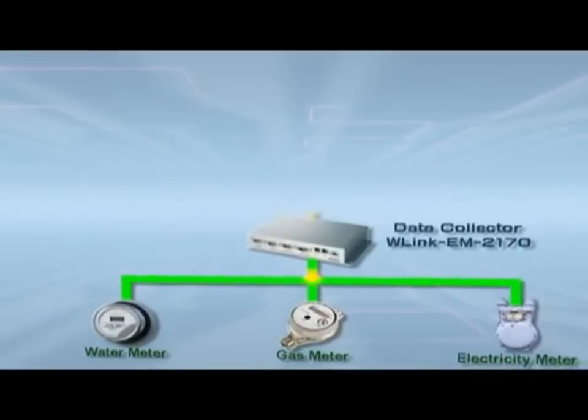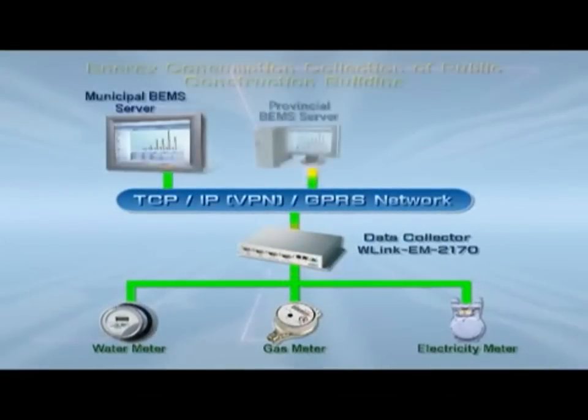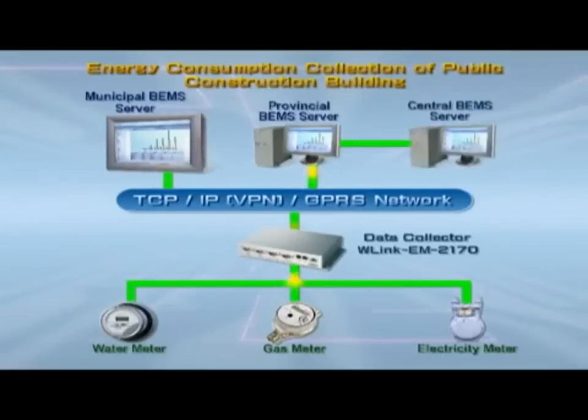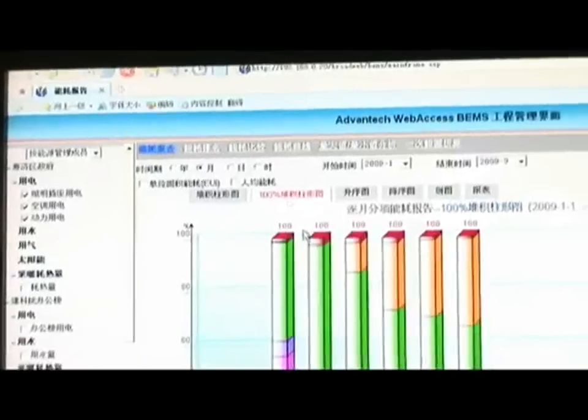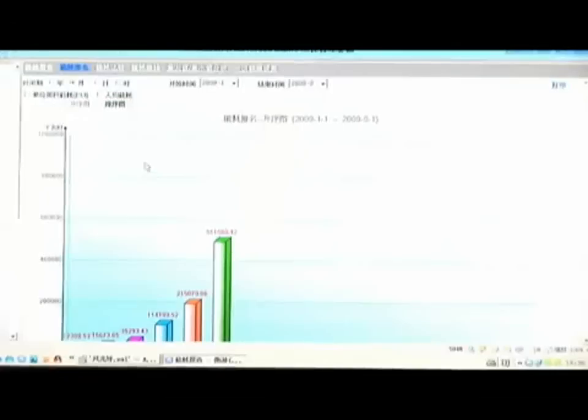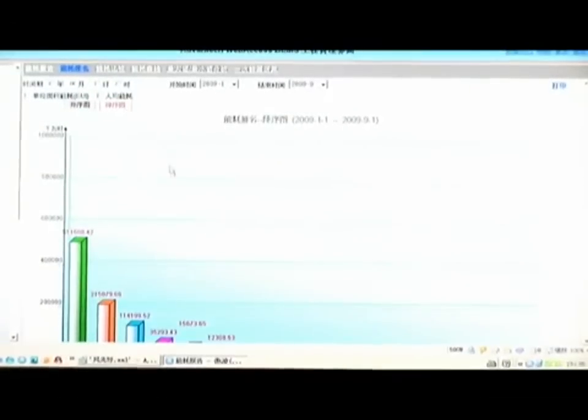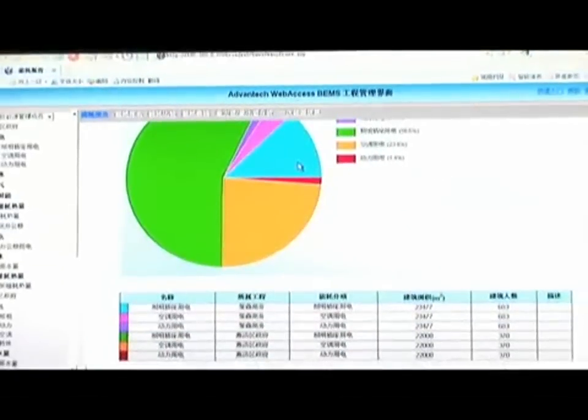For customers in China, Advantec ensures that its products meet China's strict communication standards for intelligent instruments. The energy consumption management software we develop not only meets China's technical guidelines for energy consumption monitoring systems, but also supports dynamic domain name systems, DDNS, to effectively lower communication costs for any customer.